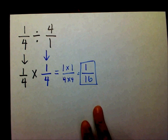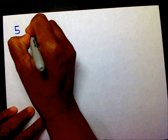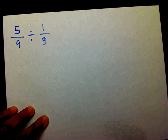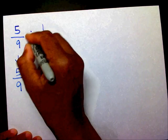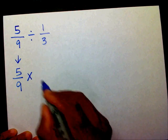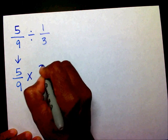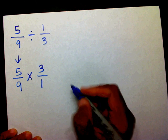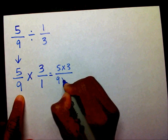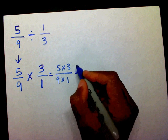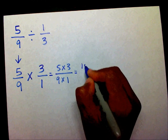Alright, let's say you had five-ninths divided by one-third. I want to keep my first fraction as is, I want to change my division to multiplication, and the reciprocal of one-third is three over one. Then I want to multiply across: five times three is fifteen, and nine times one is nine.